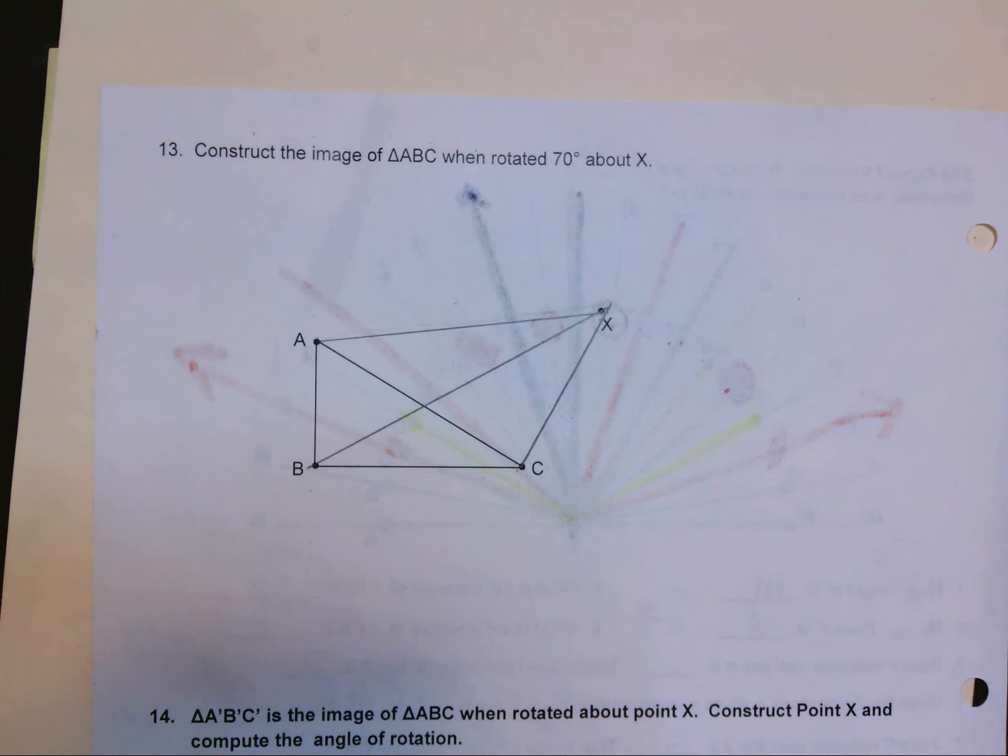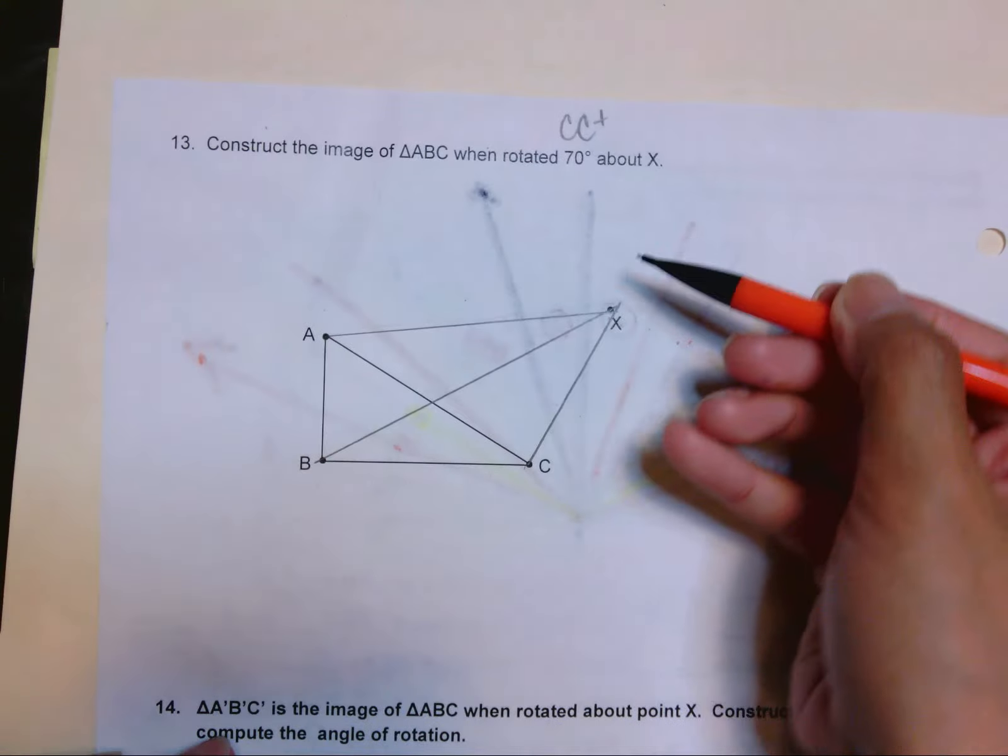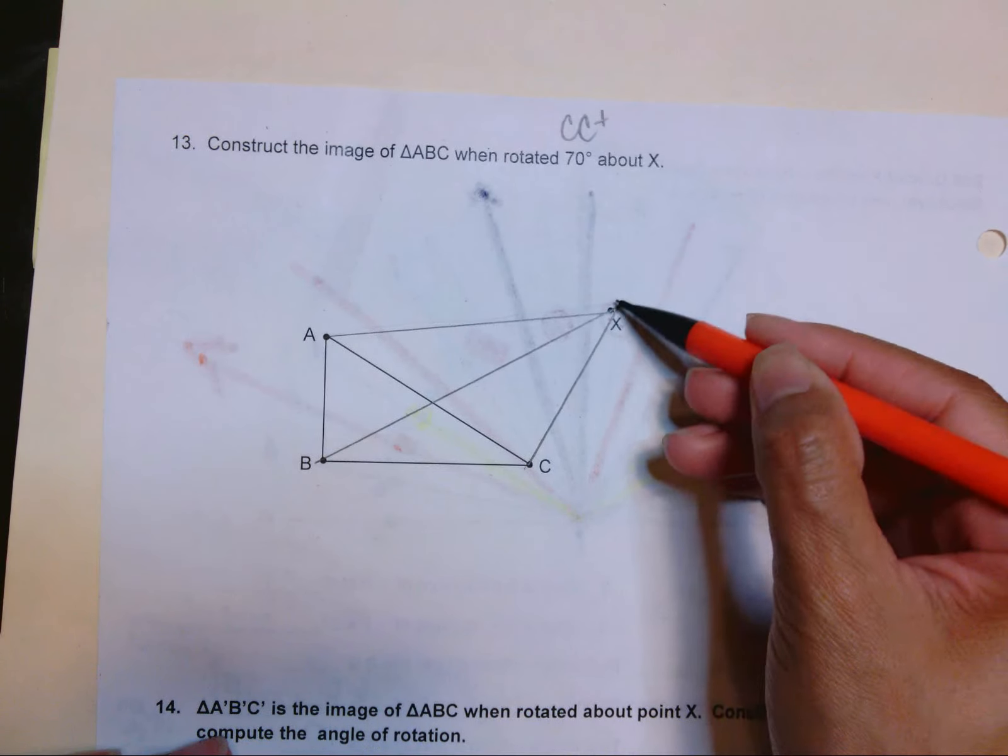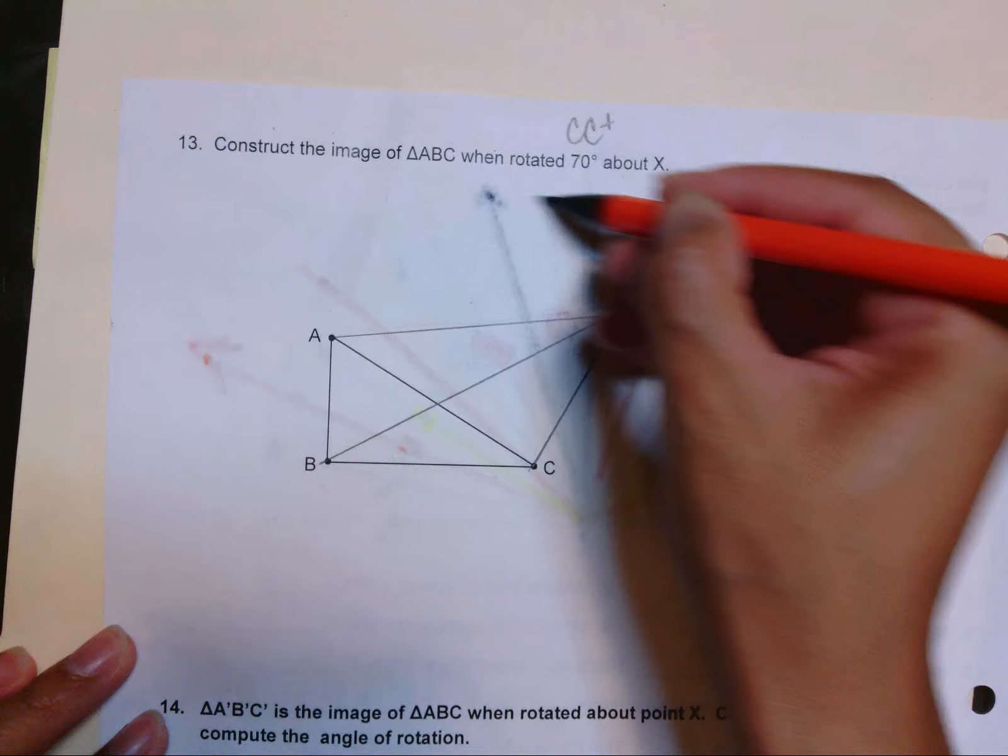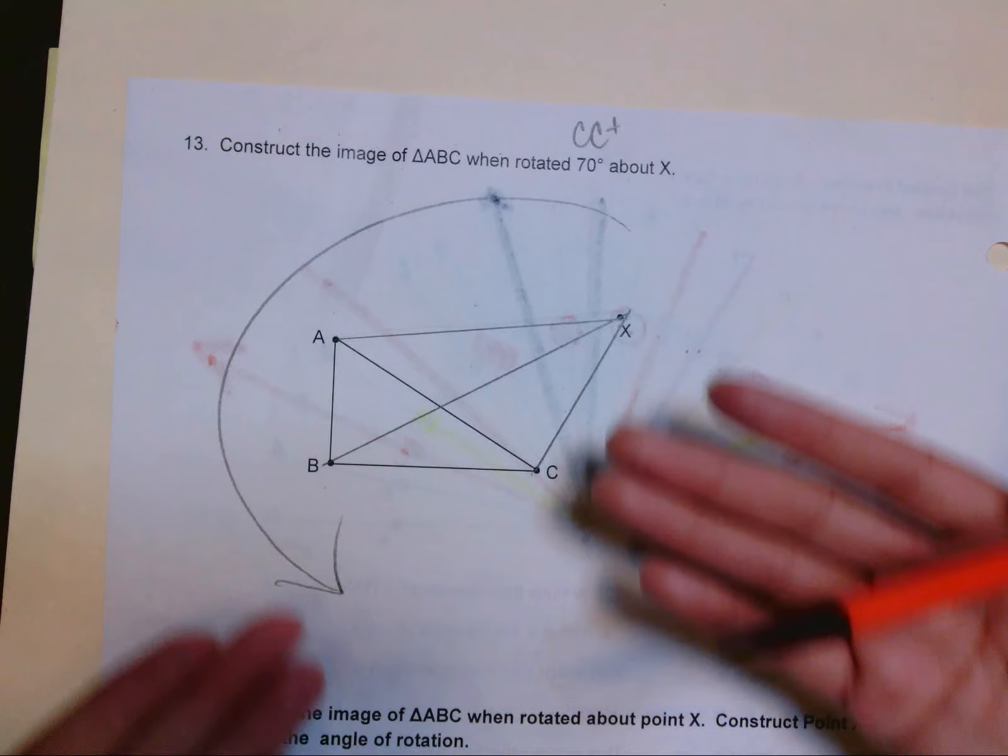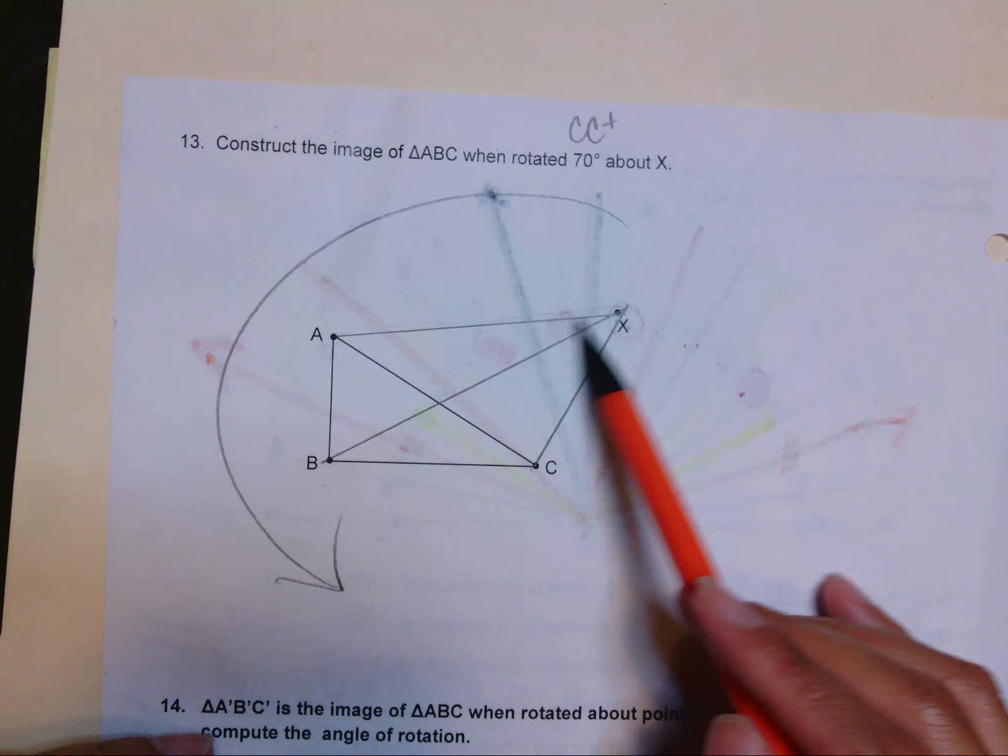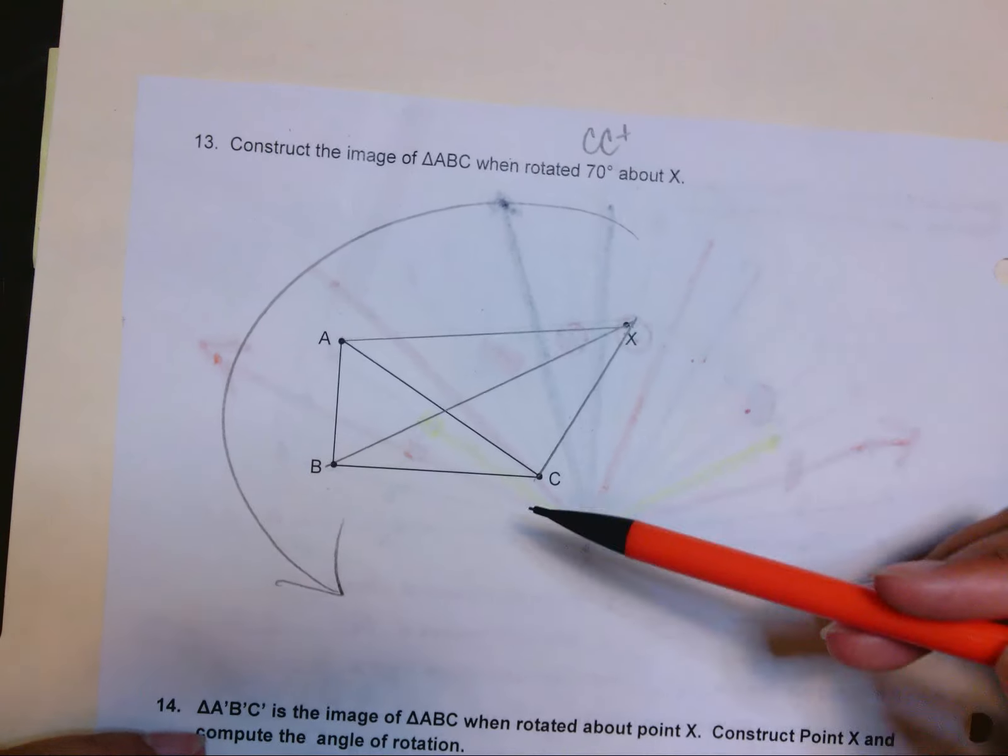It says to construct triangle A'B'C', the image of triangle ABC when rotated 70 degrees about X. So we're talking about finding A' B' and C' when rotated 70 degrees about X. That's positive, so that would be counterclockwise. So that means we are rotating it this direction, so the answer should be at the bottom, not on top.